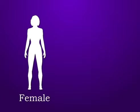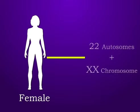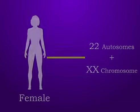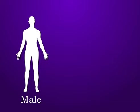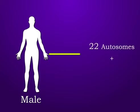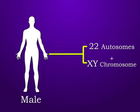In a female, only one type of sex chromosomes are there, which is X chromosome. But in a male, both X and Y sex chromosomes are there.